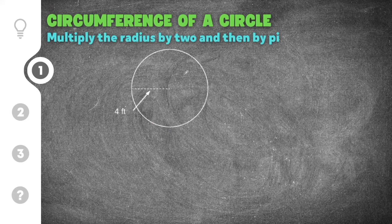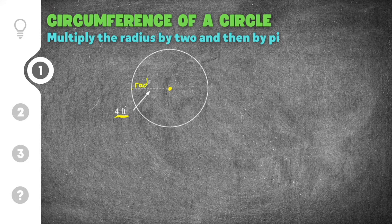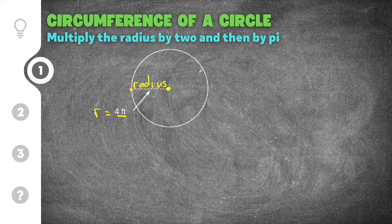This problem gives us a circle and you can see we have a dotted line running from the center of the circle out to the edge, labeled with four feet. Because it's from the center out to the edge, this is going to be the radius, so I know that four feet equals r, the radius.